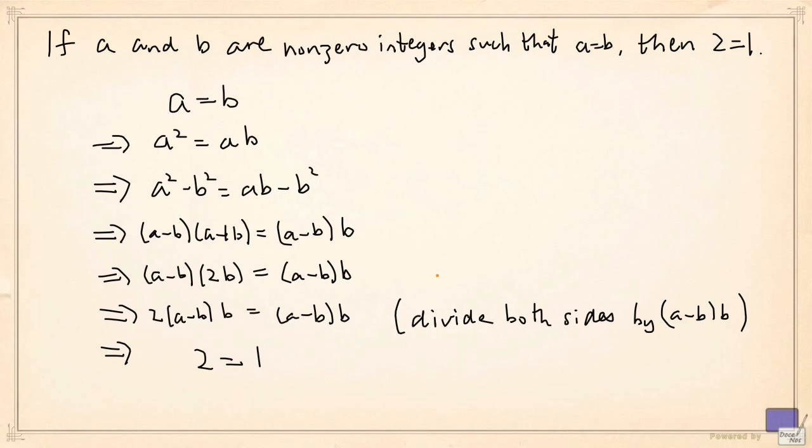In short, the proof contained a deduction that shouldn't have been made in the first place.